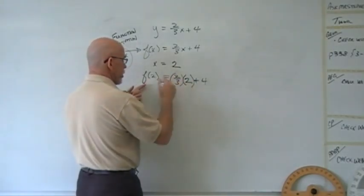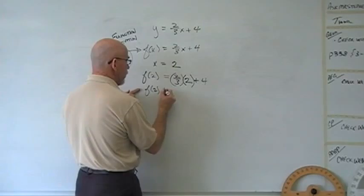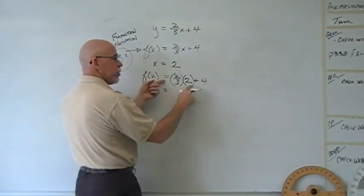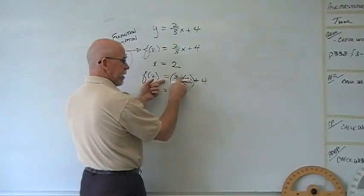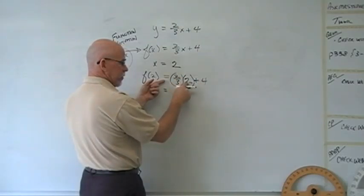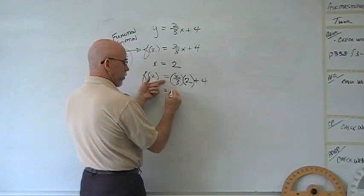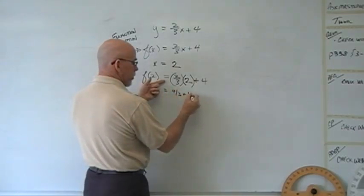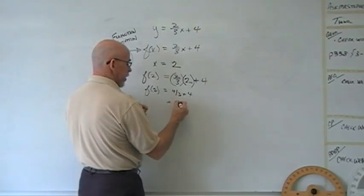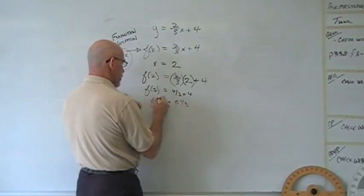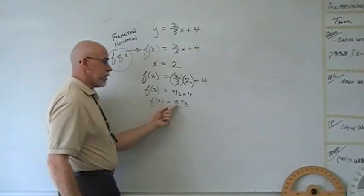Now we just do the arithmetic over here to find the value of the function f at two. We just do this arithmetic over here, multiplying and dividing first, and then adding. Two times two is four. Four divided by three is four-thirds. And four-thirds plus four is one and a third plus another four. That's five and one-third. So the value of the function at two is equal to that value.